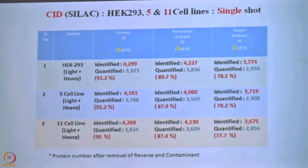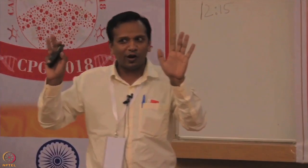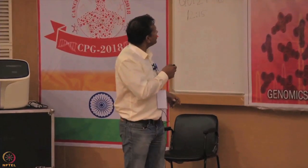By deep proteome with fractionation you will get 10,000 proteins per cell line, but we also thought we should go single-shot to see what happens in one run. There is no comparison — one run gives direct results. Both approaches we have used. In single-shot CID, you know CID and HCD — high-energy collision dissociation; today is the era of HCD. You take HEK293 light plus heavy — comparing them there should theoretically be no difference in quantitation, no up-regulation or down-regulation.